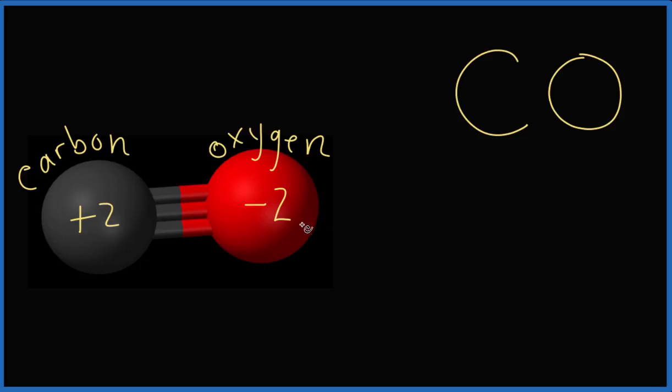So the oxidation number on the oxygen is going to be minus two. The carbon, that's plus two. If we had another compound like carbon dioxide, then it could be a different number, but the oxygen, that's usually minus two.